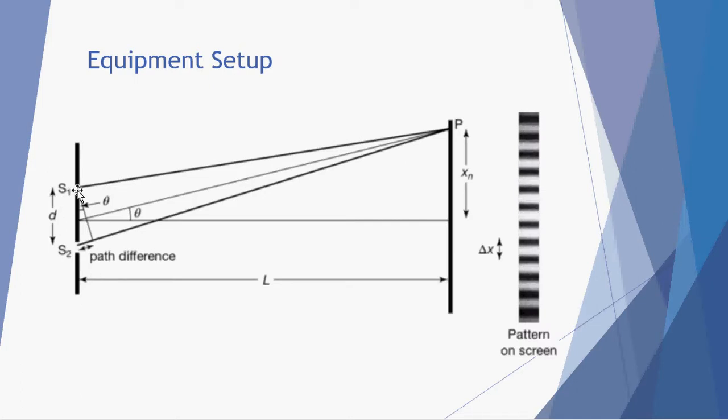So we have here a slit or source 1 and another second slit, source 2. They're separated by some distance d. The other variable we're looking at here is the distance from the slits to the screen, which we give a symbol L. When this happens we have an interference pattern that generates a sequence of bright and dark fringes or bands on a screen.